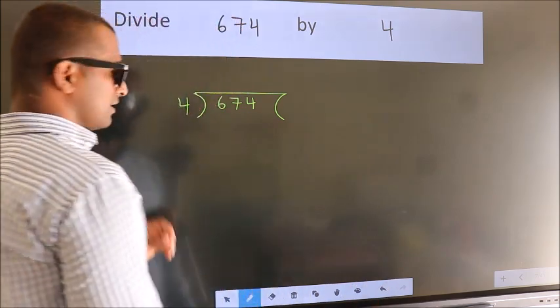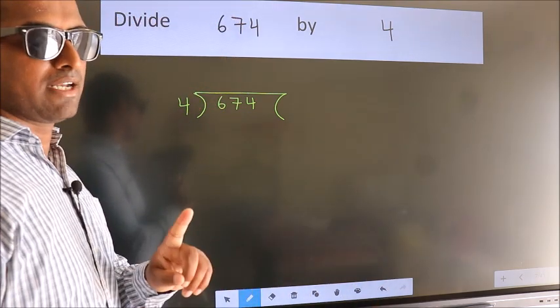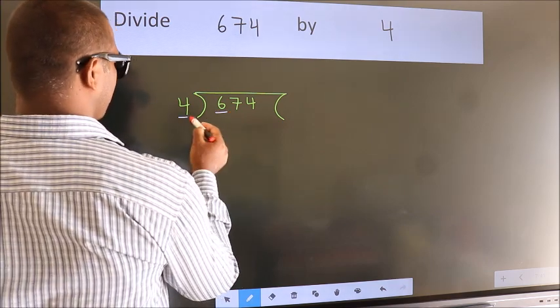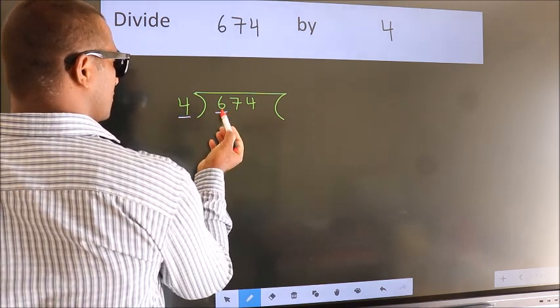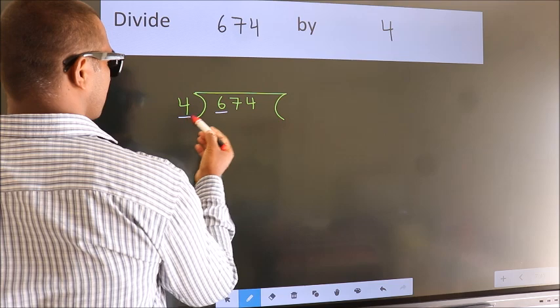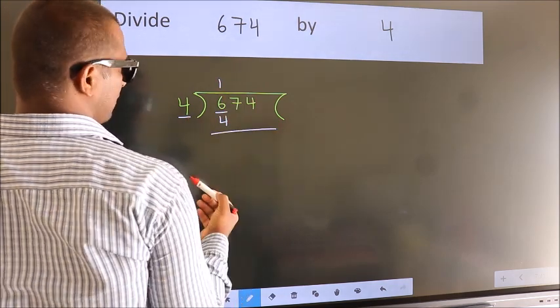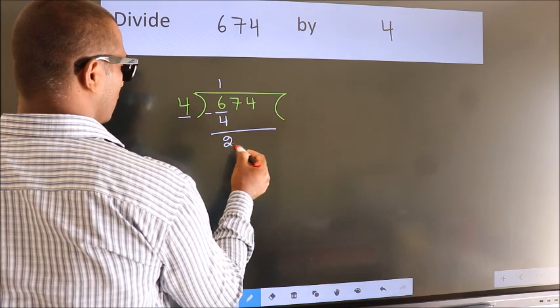This is your step 1. Next, here we have 6, here 4. A number close to 6 in the 4 table is 4 once 4. Now we should subtract. We get 2.